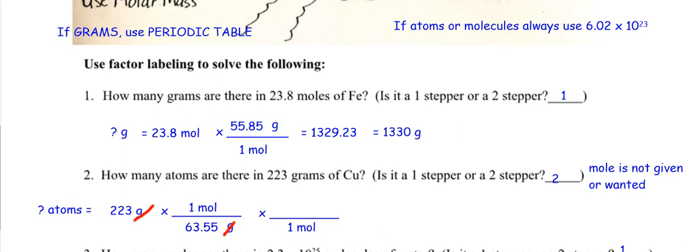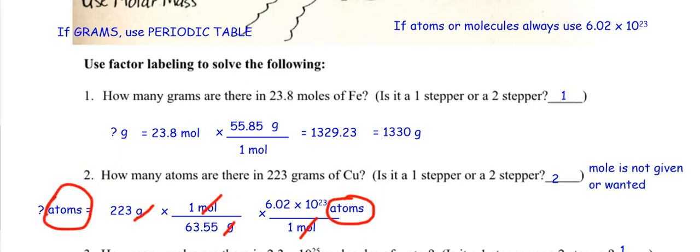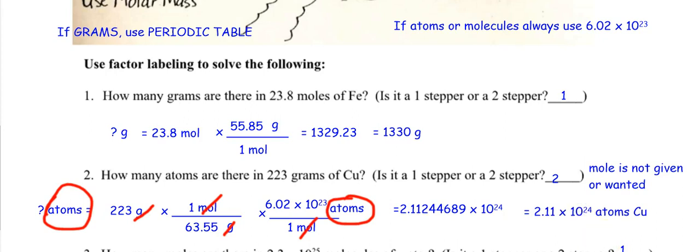The unit mole is going to cancel out. What's going to go on top? Atoms. What number always goes with atoms? 6.02 times 10²³. Now what unit is left? Atoms — and that's the unit we want. Get out the calculator: 223 divided by 63.55, then times 6.02 times 10²³. I need three sig figs — one, two, three. So it's 2.11 times 10²⁴ atoms of copper.